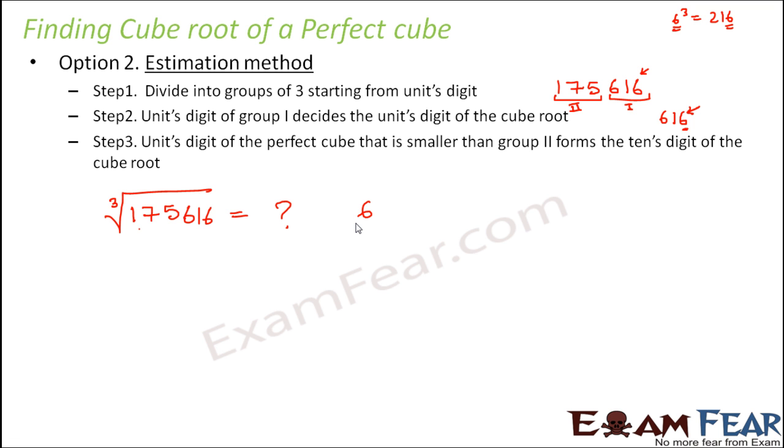Now in step number 3, the units digit of the perfect cube that is smaller than group 2 forms the tens digit of the cube root. So now we will focus on group 2 which is 175. Now here we have to find out a perfect cube which is less than or equal to 175.